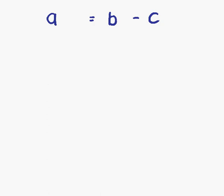This is example number 4. Our formula is a equals b minus c. The subject of our formula is currently a, and we want to change the subject to c. Unlike previous examples, switching the sides straight away isn't a good idea here. If we switch the sides, we'd have b minus c equals a, which would leave a negative sign attached to the c — and that is something we'd rather not have.